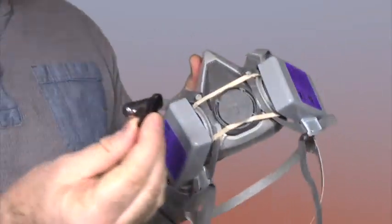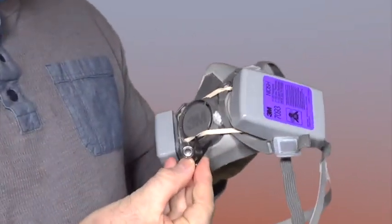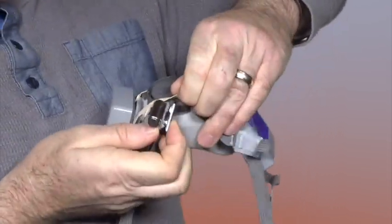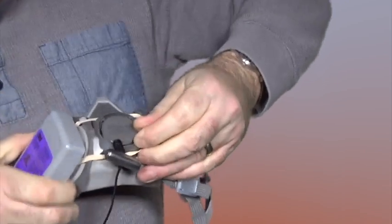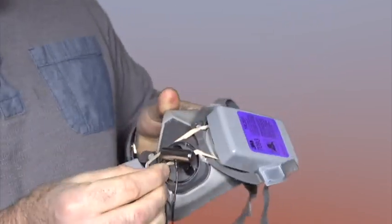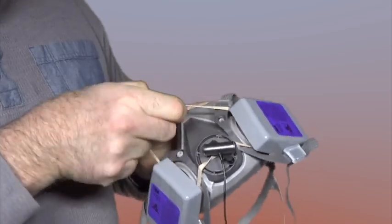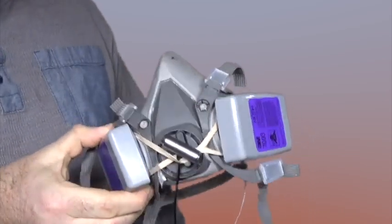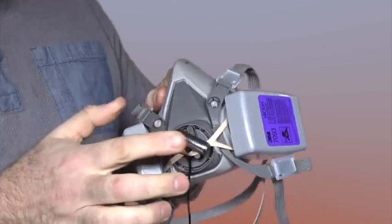Now I take my lapel mic, here it is, and I put the clip right here on the bottom rubber band like this. See that? And then I kind of pull it up like this and I pull the top rubber band over it just like that. And now that microphone is nice and tight there.